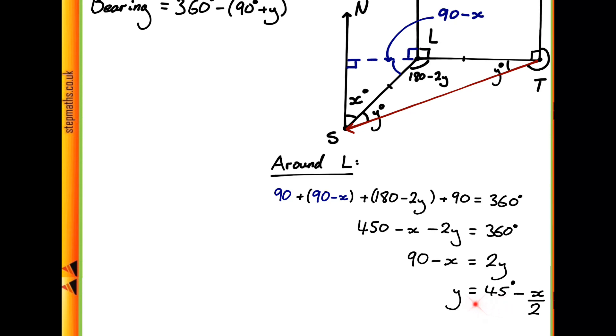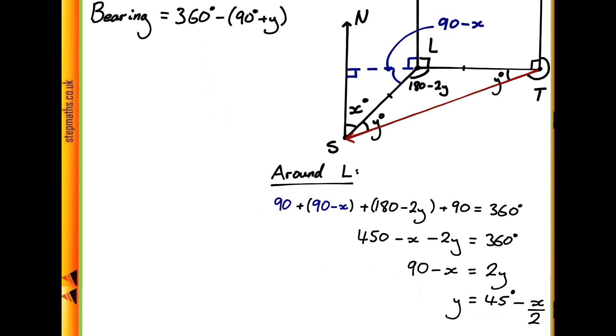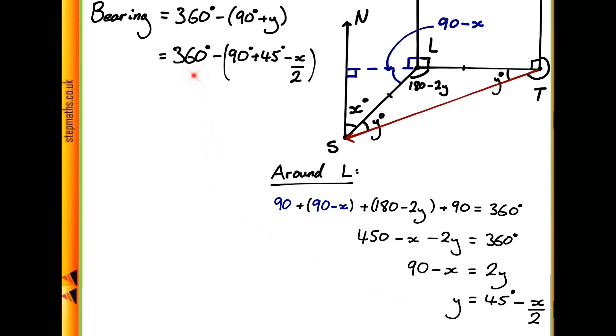And if we do that, then we get our bearing as being 360 degrees take away our 90 degrees plus our expression for y, 45 minus x over 2. So adding these two out, the 90 and 45 together, this becomes 360 take away our 135, and then the minus and the minus together make a plus of x over 2.